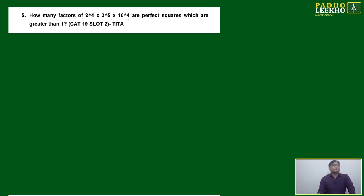How many factors of 2 to the power 4, 3 to the power 5, 10 to the power 4 are perfect squares which are greater than 1?